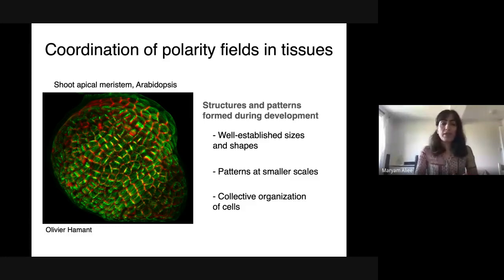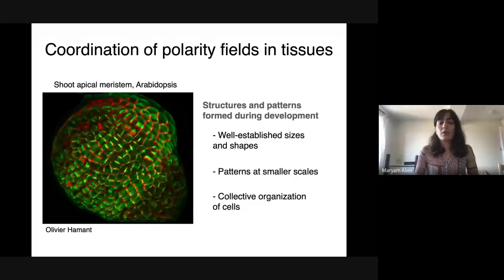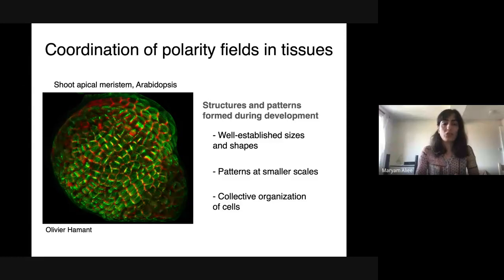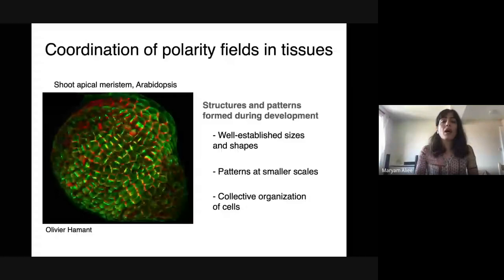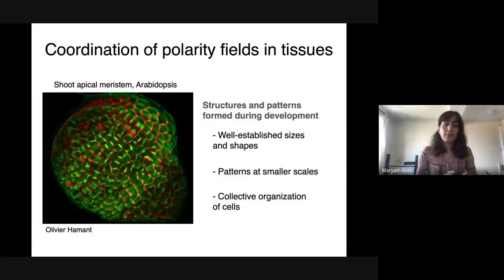Even if we zoom in, we see precise structures and patterns on smaller scales, for example in tissues which are 2D sheets of cells. I want to highlight the formation of large-scale polarity patterns in tissues. Here you can see the shoot apical meristem in plants where new organs are developed. The cytoskeleton, actin filaments, are aligned very well and form a reproducible pattern important for development.